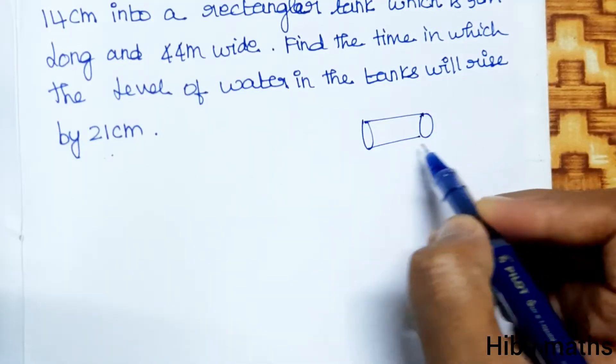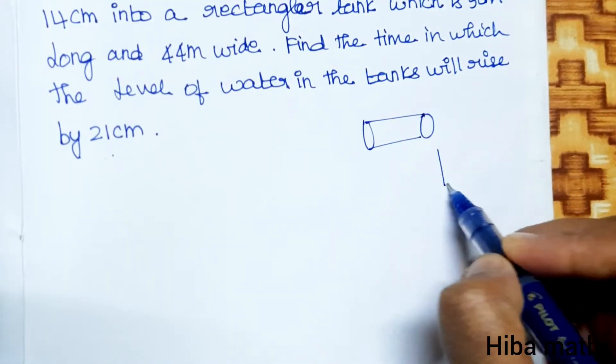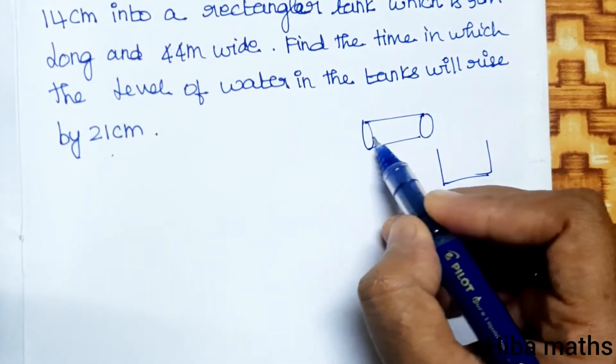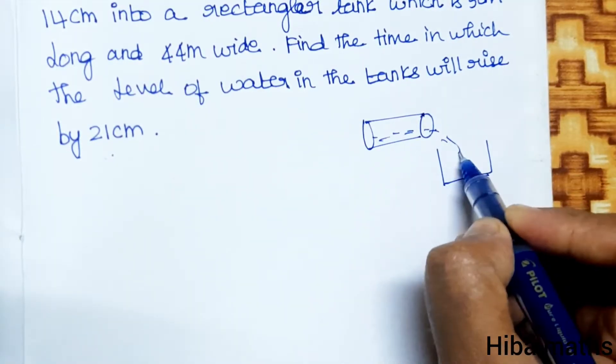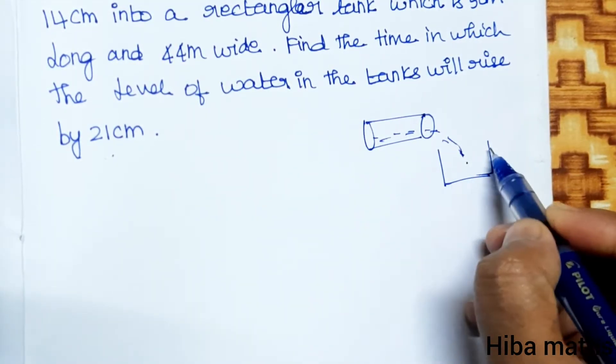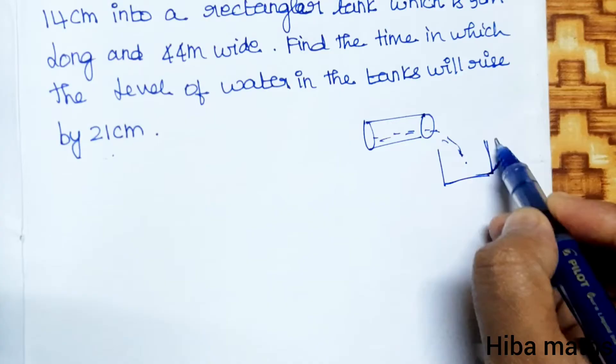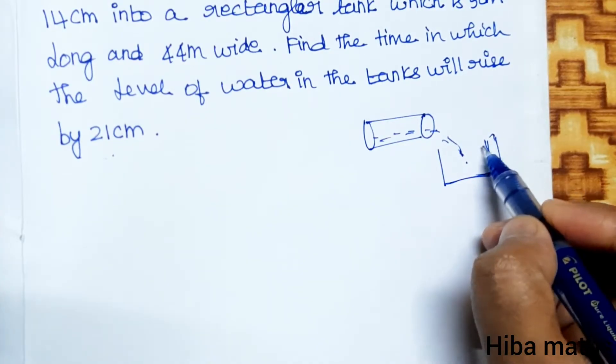Cylindrical pipe flows into the tank. The pipe follows cylindrical formula. The tank has length and breadth, so this is a cuboid formula.